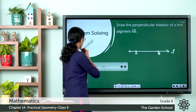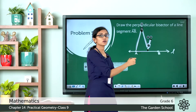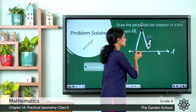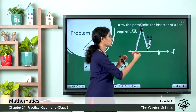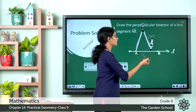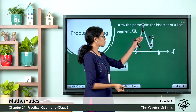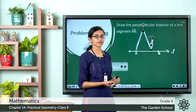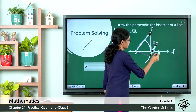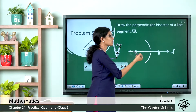Now the next step is to take the compass. Keep the point of the compass at one of the end points of the line segment — I am keeping it at point A. Choose a radius which is more than half of the length of AB. With A as the center, let us draw an arc one above the line and one below the line. Here we have drawn two arcs, one above line segment AB and one below line segment AB.